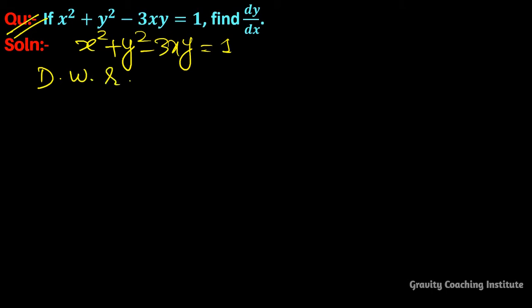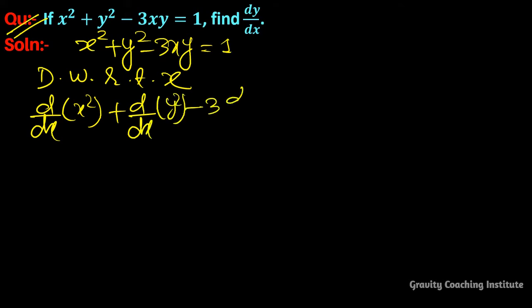Differentiate with respect to x. Derivative of x², derivative of y², minus 3 times derivative of xy, and the derivative of 1 will be 0. So this implies that...